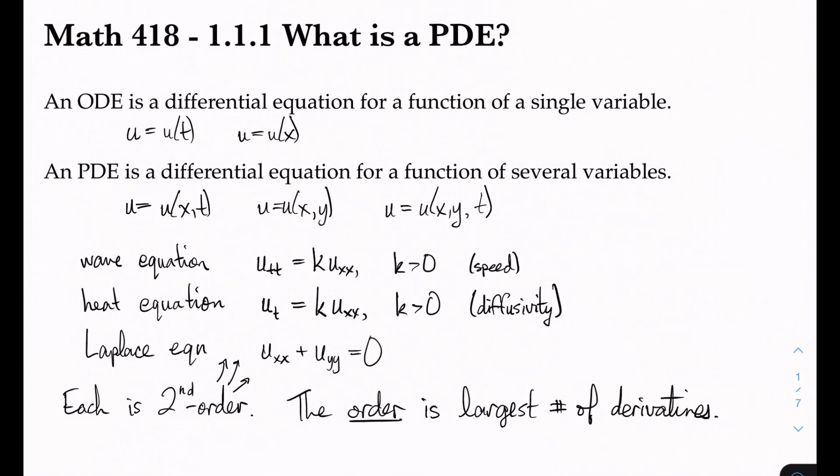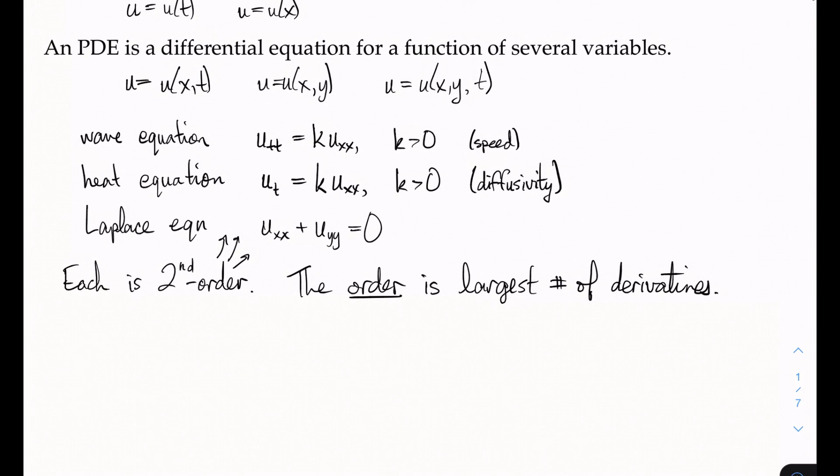So we also have some terminology. u, the unknown function, we often call this the state variable. So it's the thing that's dependent on the other variables. So the x, y, t, these ones would be the independent variables.